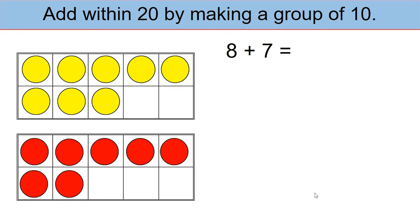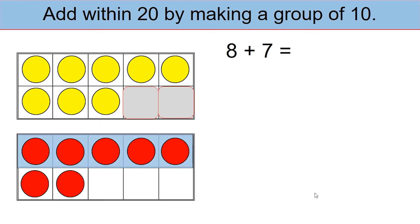As you can see in the first tens frame, there are two spaces that are missing to make this a 10. We have 8 yellow counters. Two more would have made it a 10. Let's look at the 7. The 7 is nothing but a 5 and a 2. Let's break the 7 as 5 plus 2. Let's drag these two red counters to the space over here.